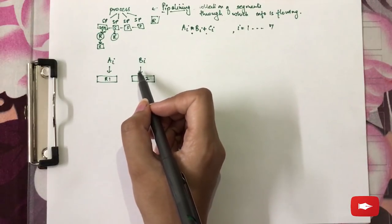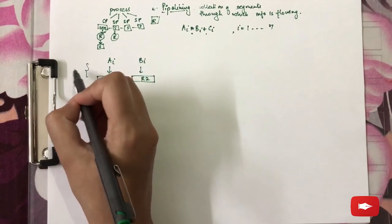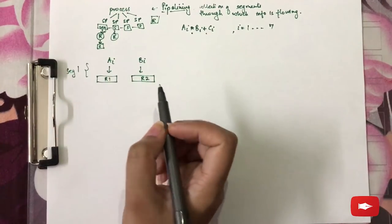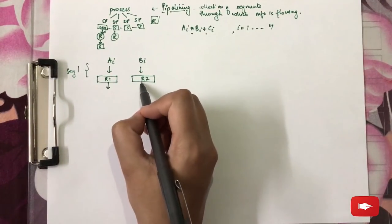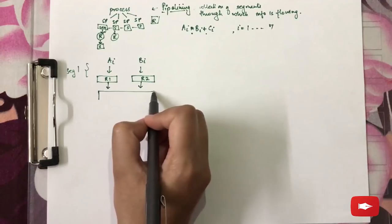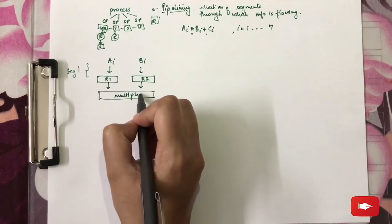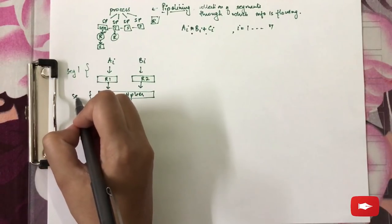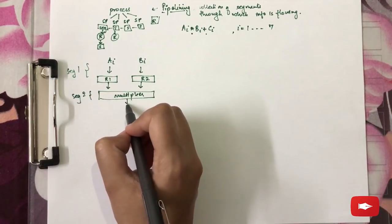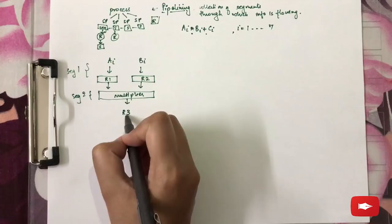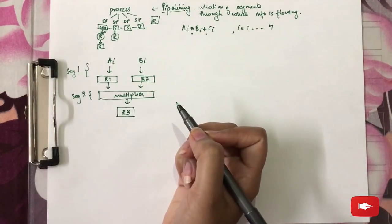Therefore, we are loading ai and bi into two registers. This is segment 1. The result is going into a multiplier. This is segment 2 and the result of this multiplier is being stored in a register R3.